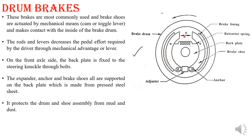Two brake shoes of semicircular shape are anchored on the back plate. Brake lining — the frictional lining — is provided on the outer periphery of the brake shoes and makes contact with the drum. One or two retractor springs are provided so that the brake shoes are always kept away from the drum during normal running conditions — that is, when the brake pedal is not pressed.